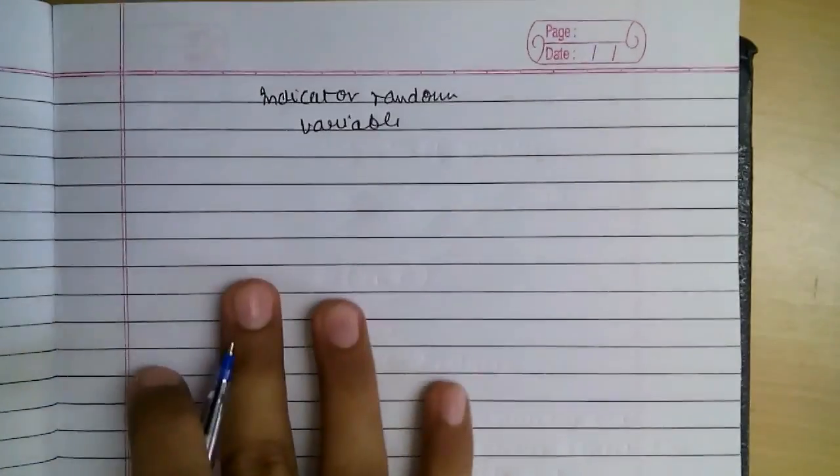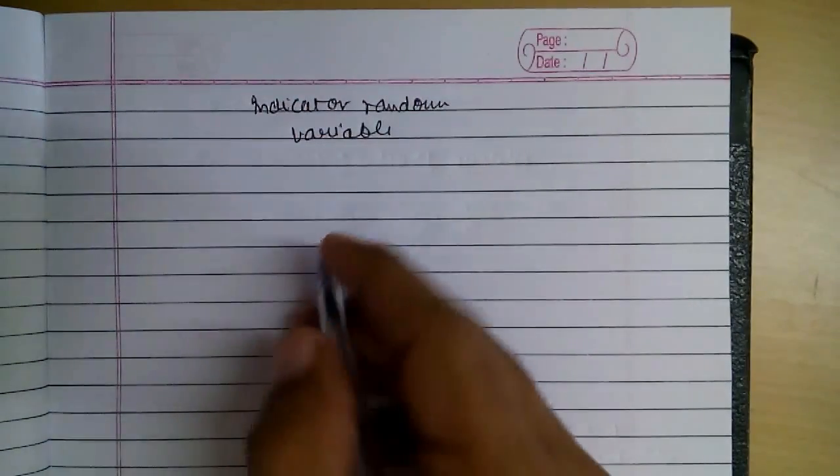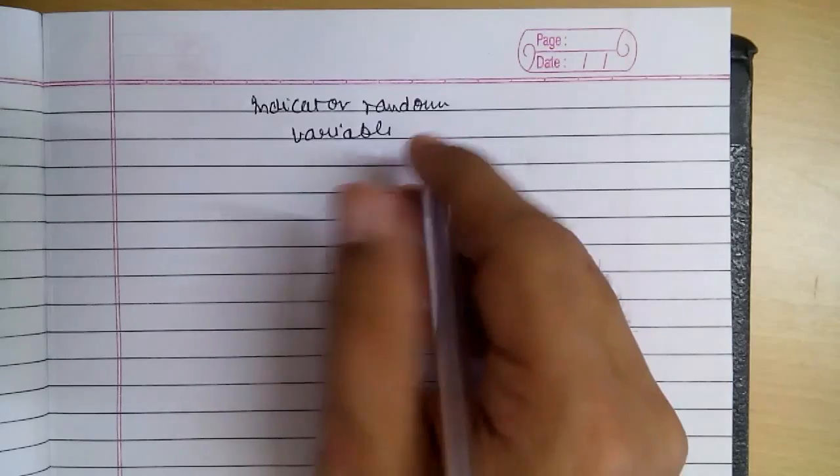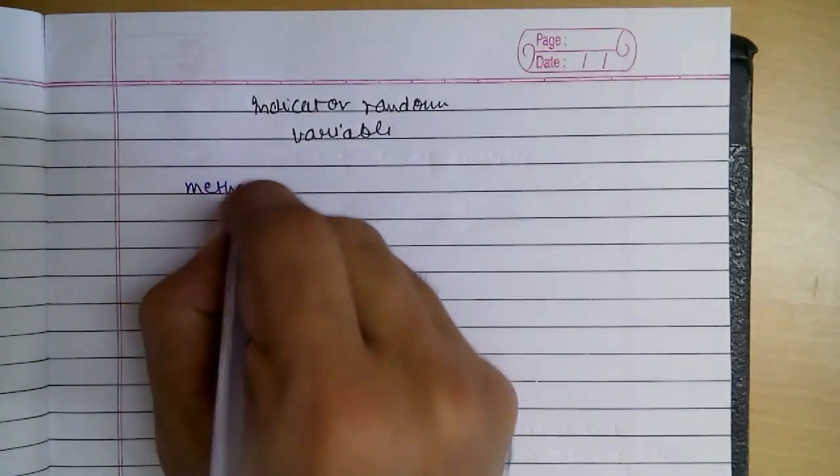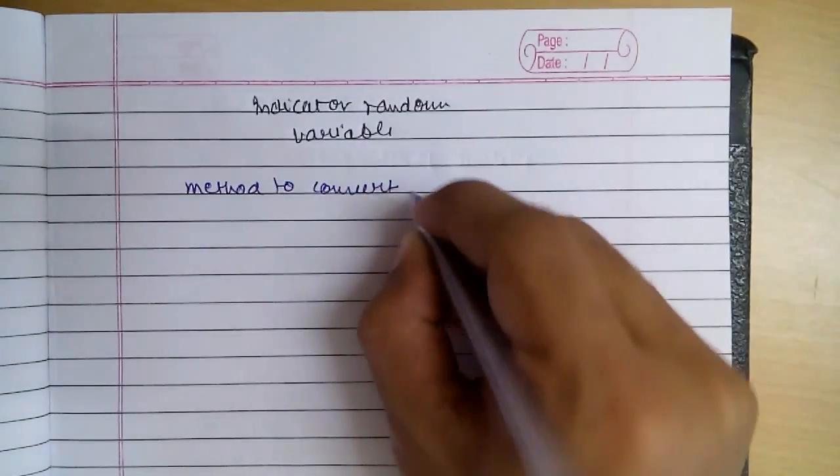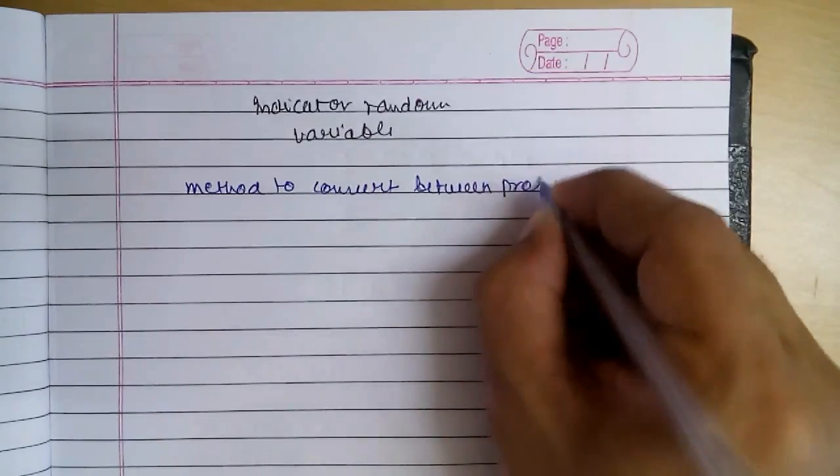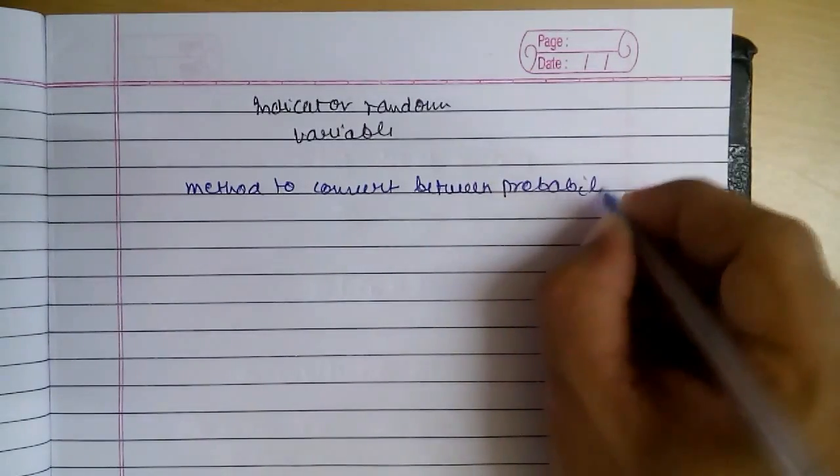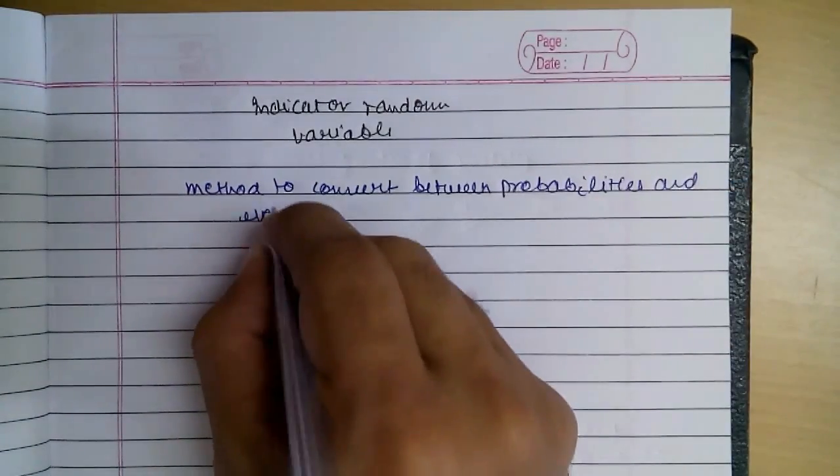To move further in our analysis, we first need to understand a simple concept known as Indicator Random Variable. It is a method to convert between probabilities and expectations.